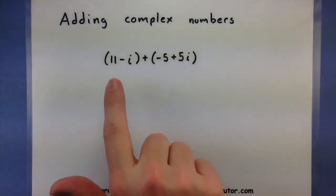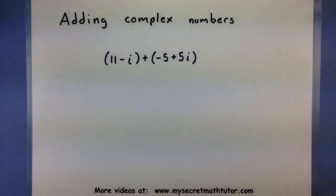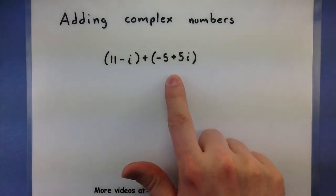So what I want to do is add the complex number 11 minus i with the complex number minus 5 plus 5i.